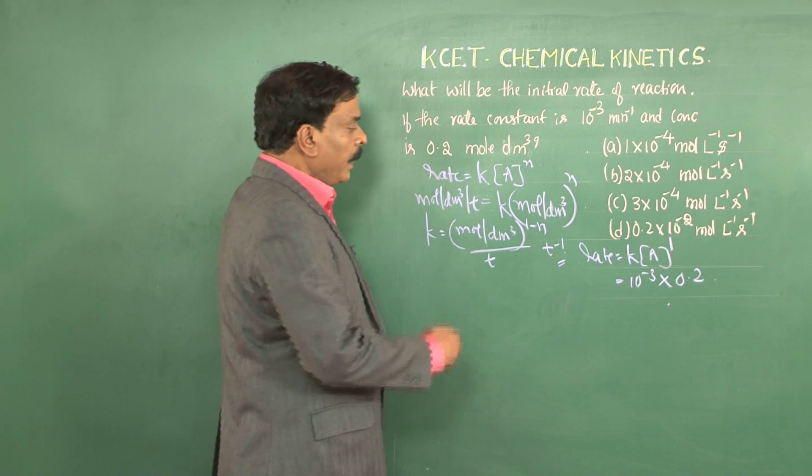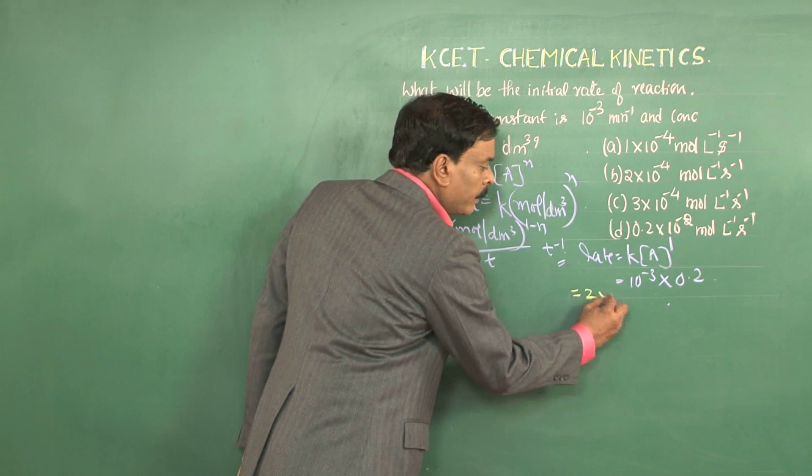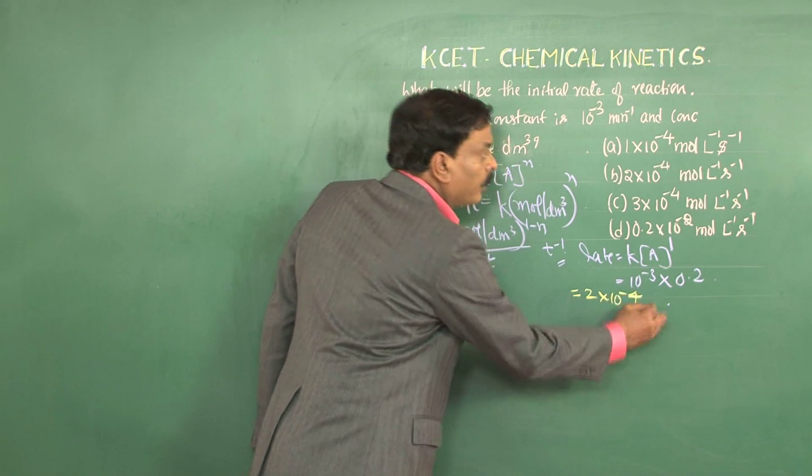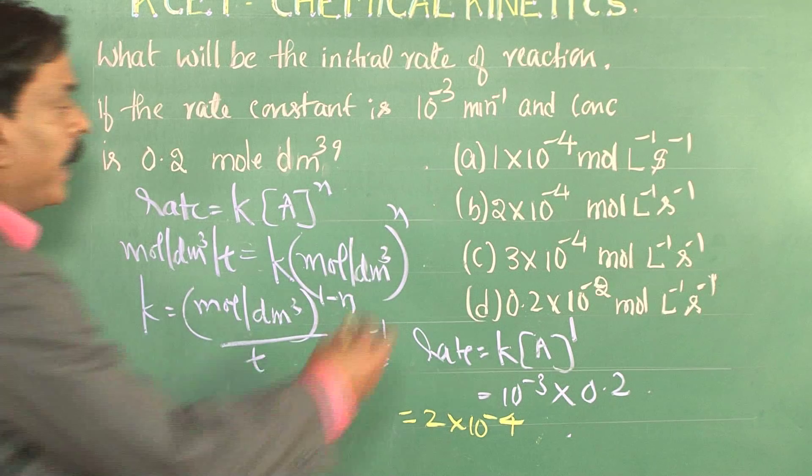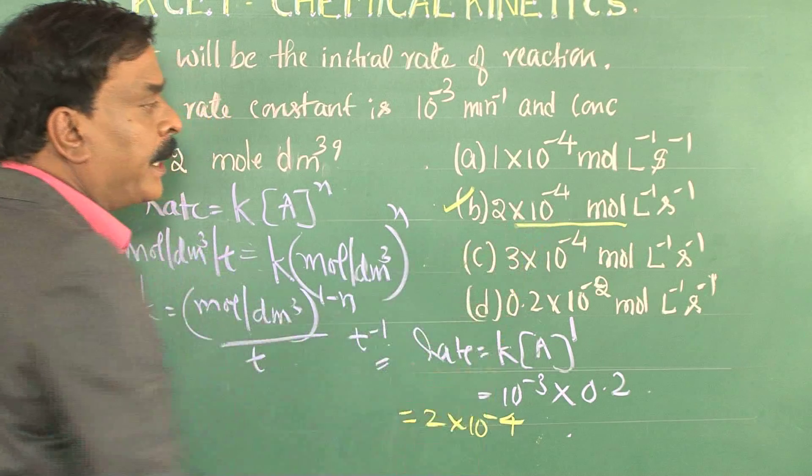Therefore, the rate of the reaction value will be 2 into 10 to the power minus 4. Hence, the right option is 2 into 10 to the power minus 4 mol per litre per second.